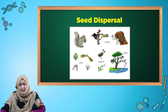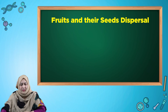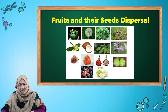Let's have a look at fruits and their seed dispersal. Some fruits disperse their seeds through water. Fruits like coconut, water lily, and mangrove disperse their seeds through water.